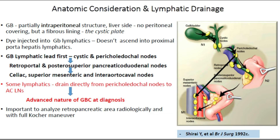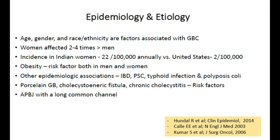In optimal consideration, the gallbladder is a partially intraperitoneal structure. On the liver side, there is no peritoneal covering but a fibrous lining — the cystic plate. The dye injected into the gallbladder lymphatics ascends into cystic and pericholedochal lymph nodes, from there to retroportal and posterosuperior pancreaticoduodenal nodes, then to celiac, superior mesenteric, and interaortocaval lymph nodes. Some lymphatics drain directly from pericholedochal nodes to interaortocaval lymph nodes, which indicates an early presentation with advanced disease. That is the significance of analyzing the aortocaval lymph nodes — if they are metastatic, it is a non-resectable disease.